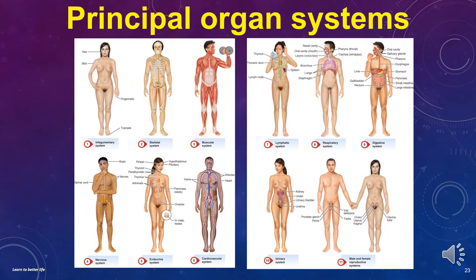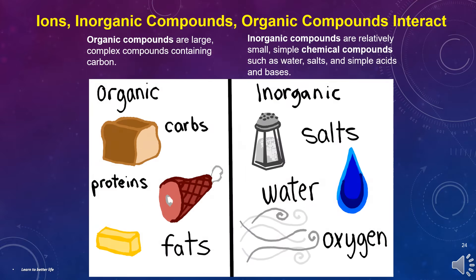Those are brief descriptions of the 11 systems in the human body. We will learn in detail in the subsequent chapters and videos. Try to remember the names of these systems. Now let's learn about how the human body is composed.